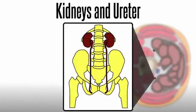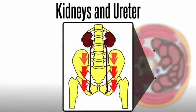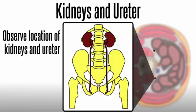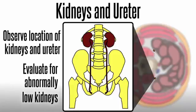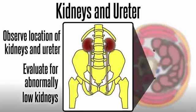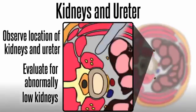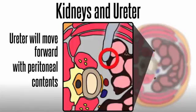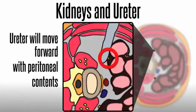Kidneys and ureters are part of the urinary system that delivers urine to the bladder. A concern for retroperitoneal procedures is the location of the kidneys and ureter and potential injury. As part of pre-op planning, surgeons should evaluate for abnormally low kidneys at the L2 disc space or kidney transplants. The ureter is usually attached to the peritoneum and will move anteriorly with peritoneal contents as they are swept forward.